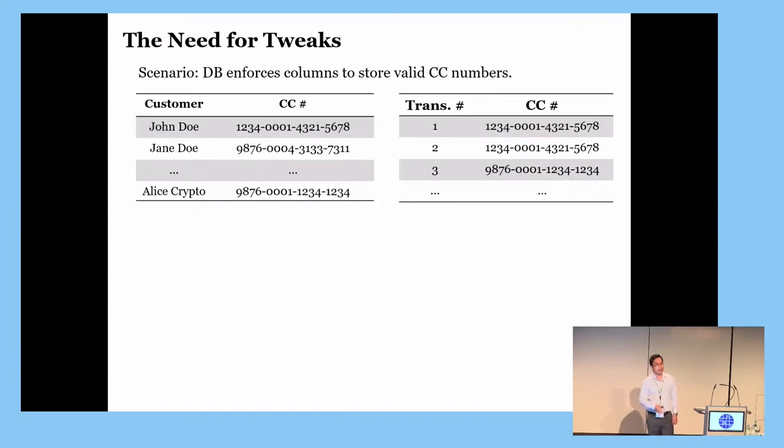To understand the need for tweaks, let's consider the following scenario where we store credit card numbers in the database. In the first table, we store the customers' names together with their credit card numbers. In the second table, we store the transaction numbers together with the corresponding credit card numbers for the purchase. If you combine the two tables, we can realize that John Doe made the first and second transactions.